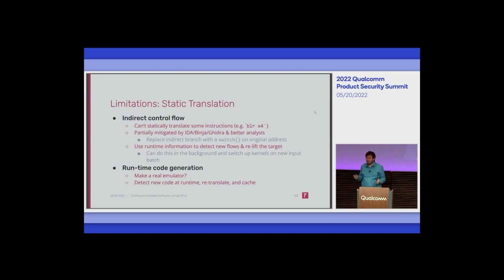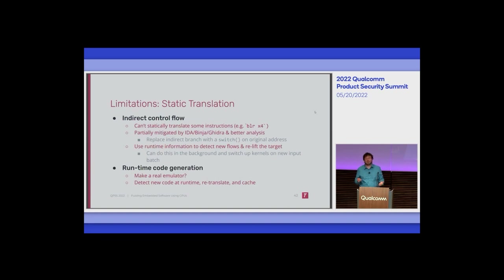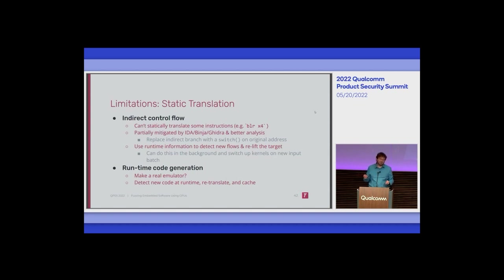Now let's talk about the bad things — limitations that will make this not work for certain cases. Right now there are limits to static translation: these aren't hard limits, there are solutions, but currently the static translator can't see past indirect control flow. The answer to this is to get a better static translator, which we have — it's just a matter of adapting it. Tools like IDA, Binary Ninja, and Ghidra are actually really good at resolving jump tables and indirect control flow to a set of possible targets.